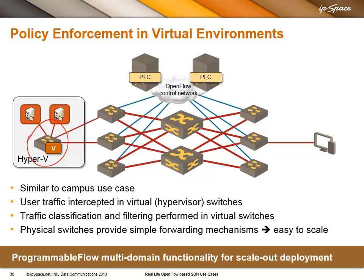Programmable flow can also control OVS, as you'll see in the next use case. In all these cases, the whole end-to-end network is controlled by a programmable flow controller. The user traffic is intercepted, and if you define a flow list through API or configuration, that flow list will get implemented as OpenFlow entries in the ingress port, which is a soft switch in the hypervisor. All the hard work will be done in the hypervisors, and the physical switches will perform just simple forwarding actions, which are easier to scale.